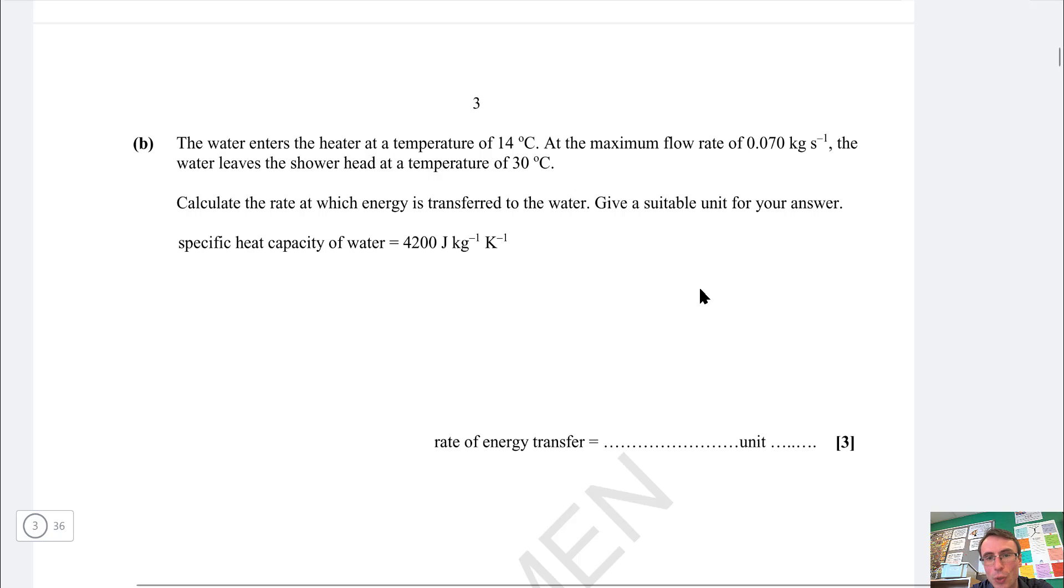Calculate the rate of energy which is transferred to the water. The rate at which energy is transferred to the water is given by the power and we're going to need to give a suitable unit for our answer. Power is given by energy divided by time. So energy is mc delta theta divided by time. In one second the mass will be 0.070 multiplied by the specific heat capacity which is 4200.